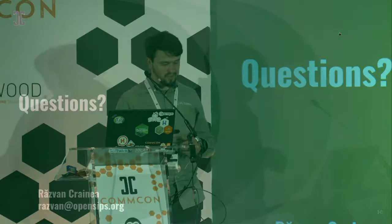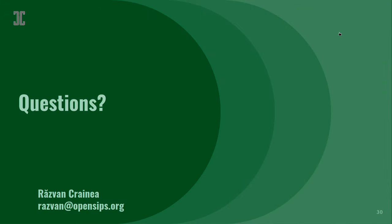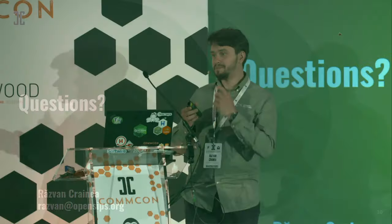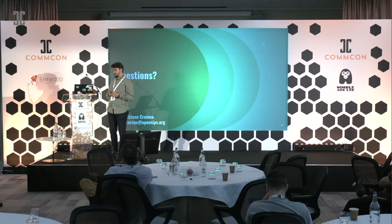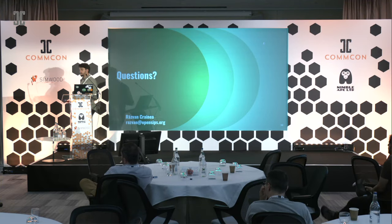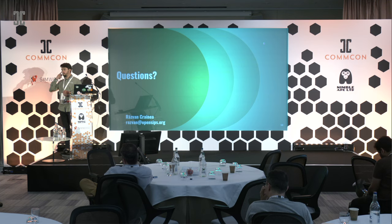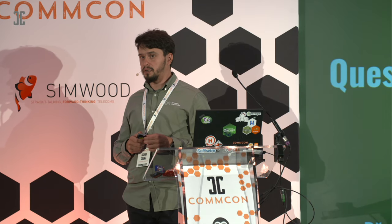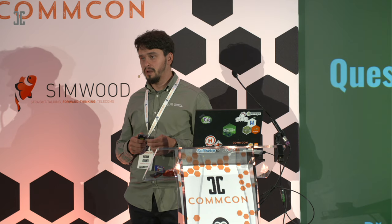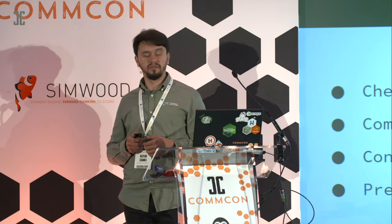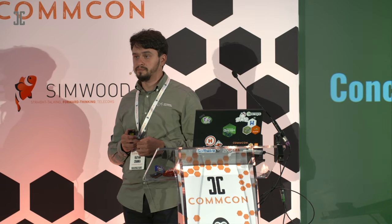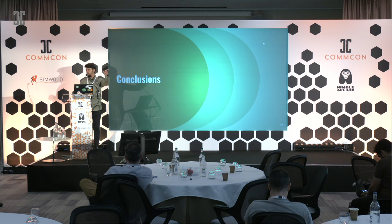I was faster than I thought. If there are any questions... On the SIPREC scenario, it looks like it requires a media server relay that can fork the media. Can RTP proxy or RTP engine do that? What do you usually see deployed in that scenario? Both of them can fork media — RTP proxy has done it for a couple of years now, and RTP engine added it a few months back or a year ago.